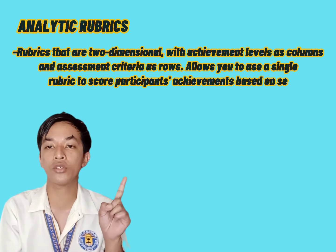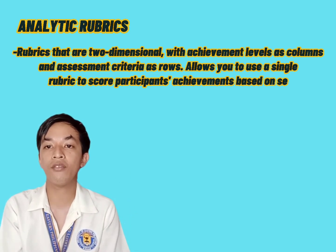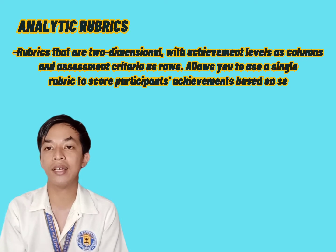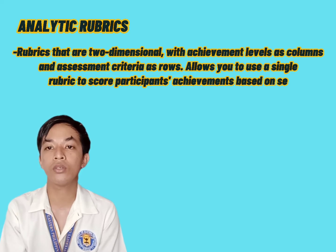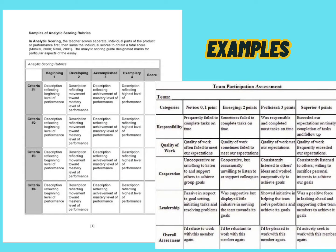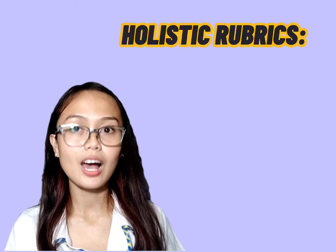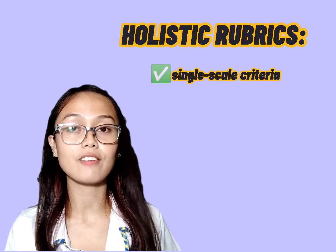Second is the analytic rubric — rubrics that are two-dimensional, with achievement levels as rows and assessment criteria as columns. Analytic rubrics allow you to use a single rubric to score participants' achievements based on several factors. These two pictures are examples of analytic rubrics: the performance analytic rubric and the analytic rubric for team participation.